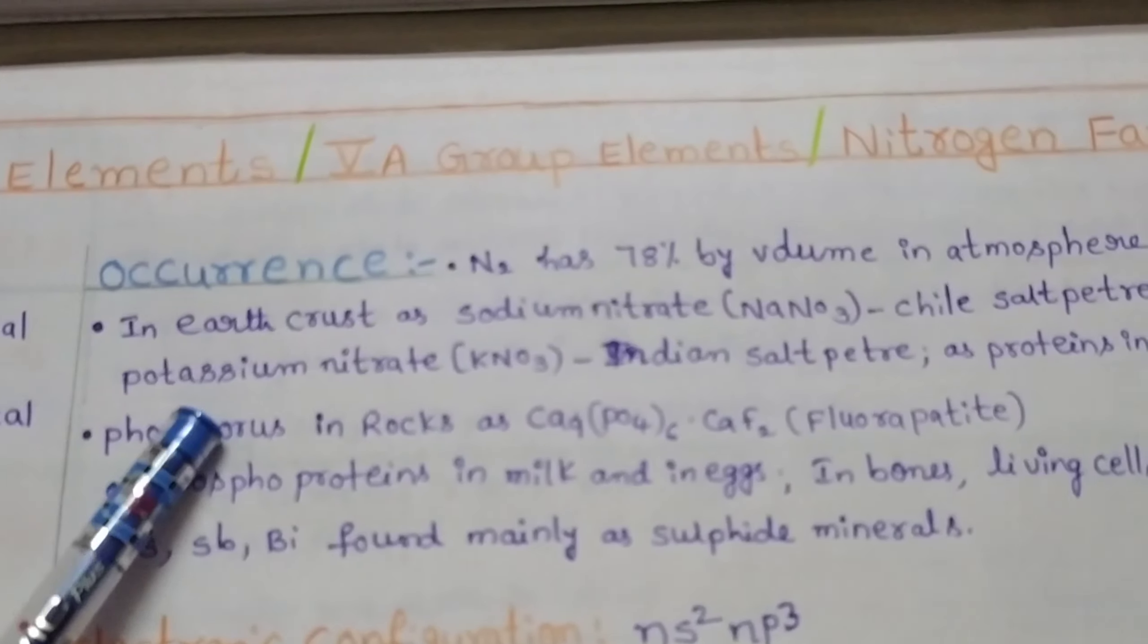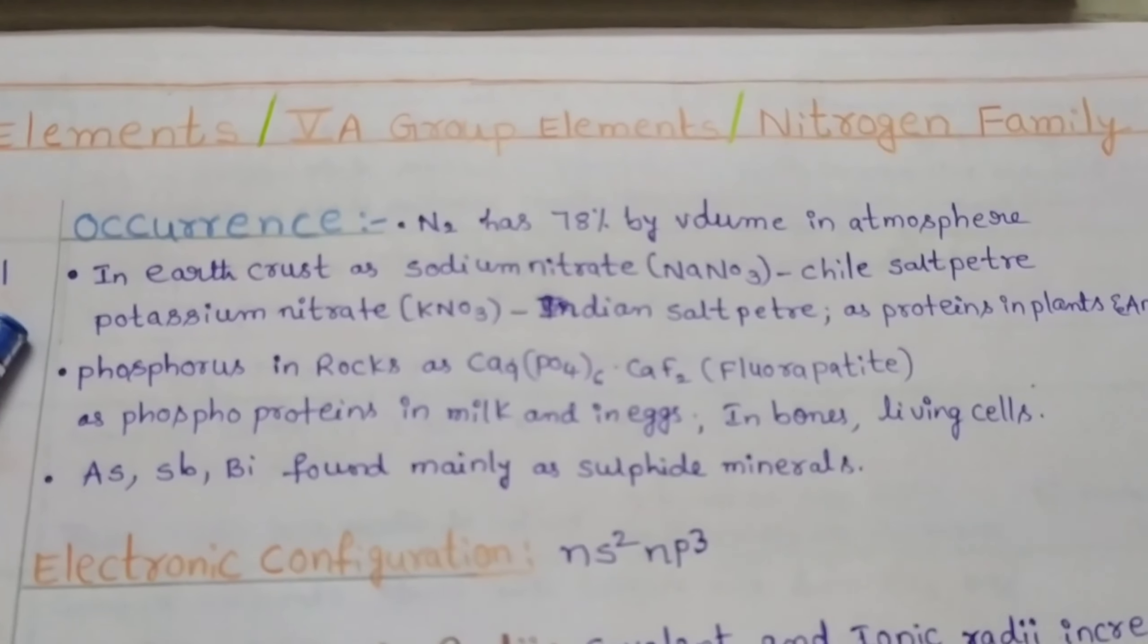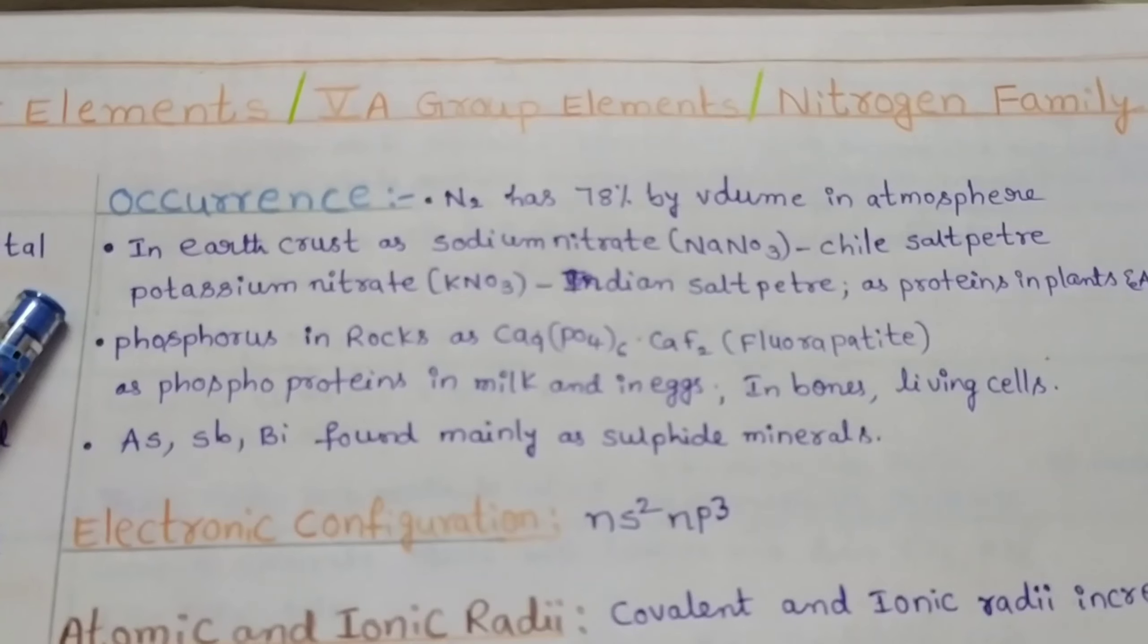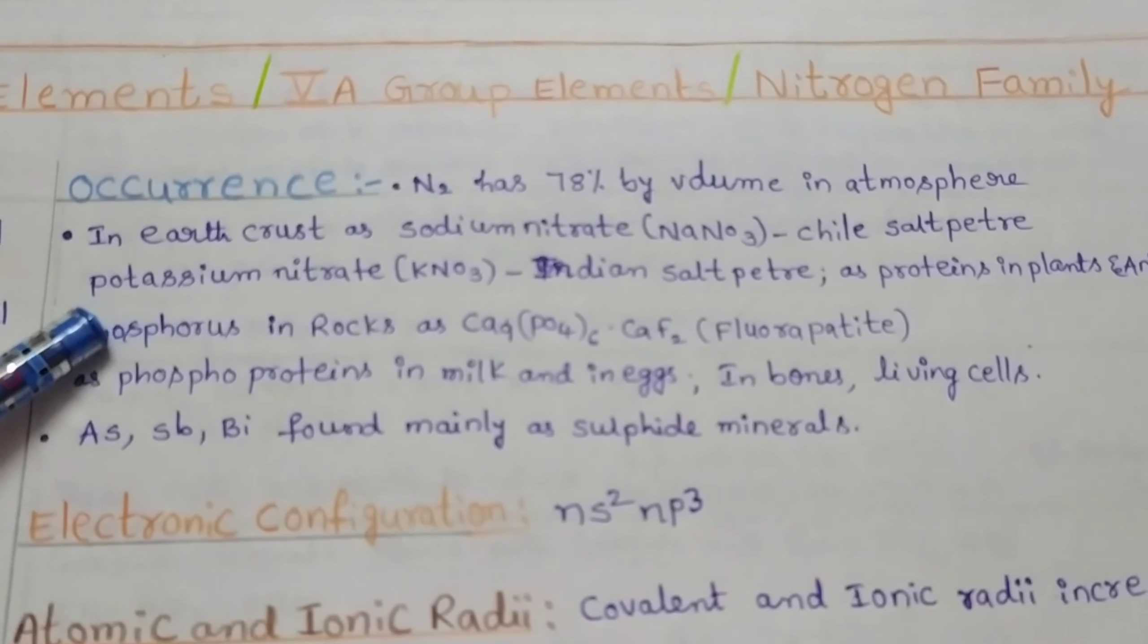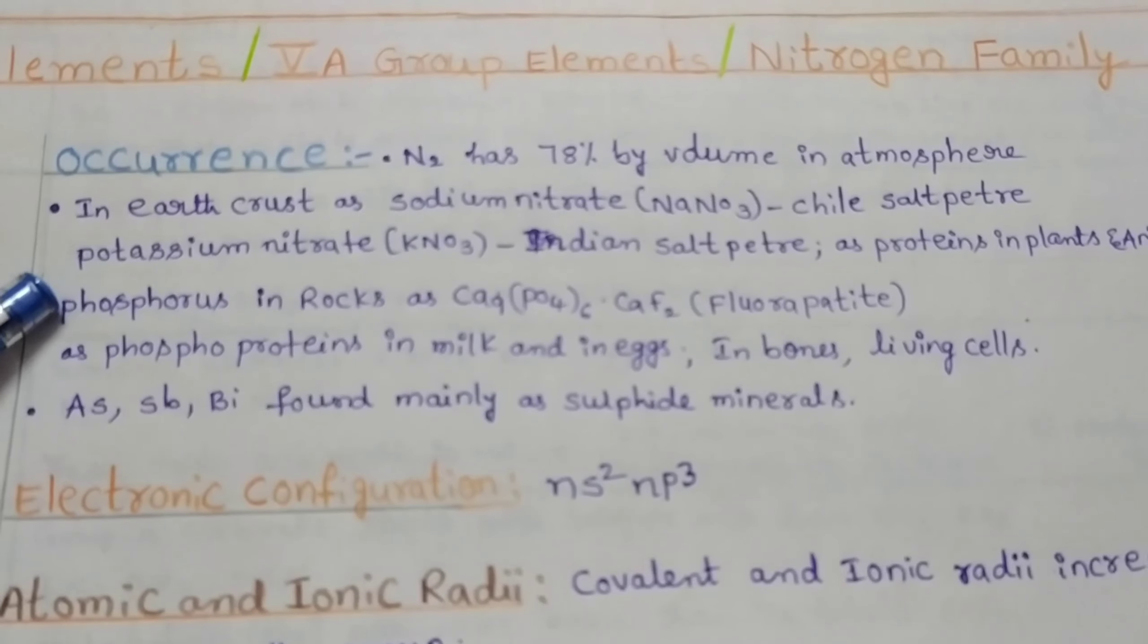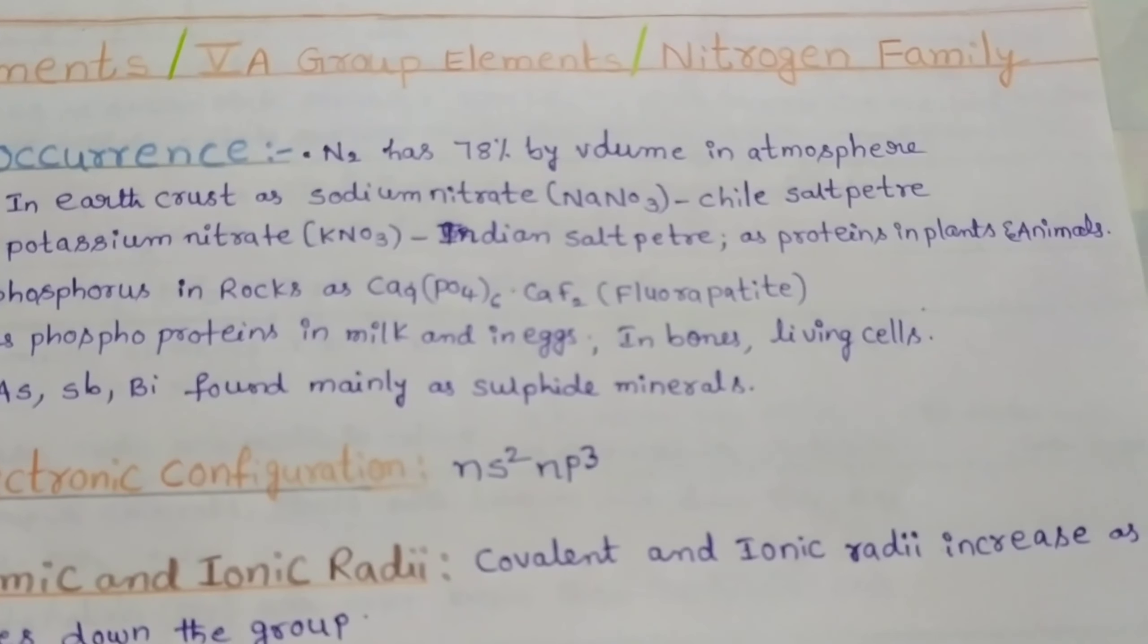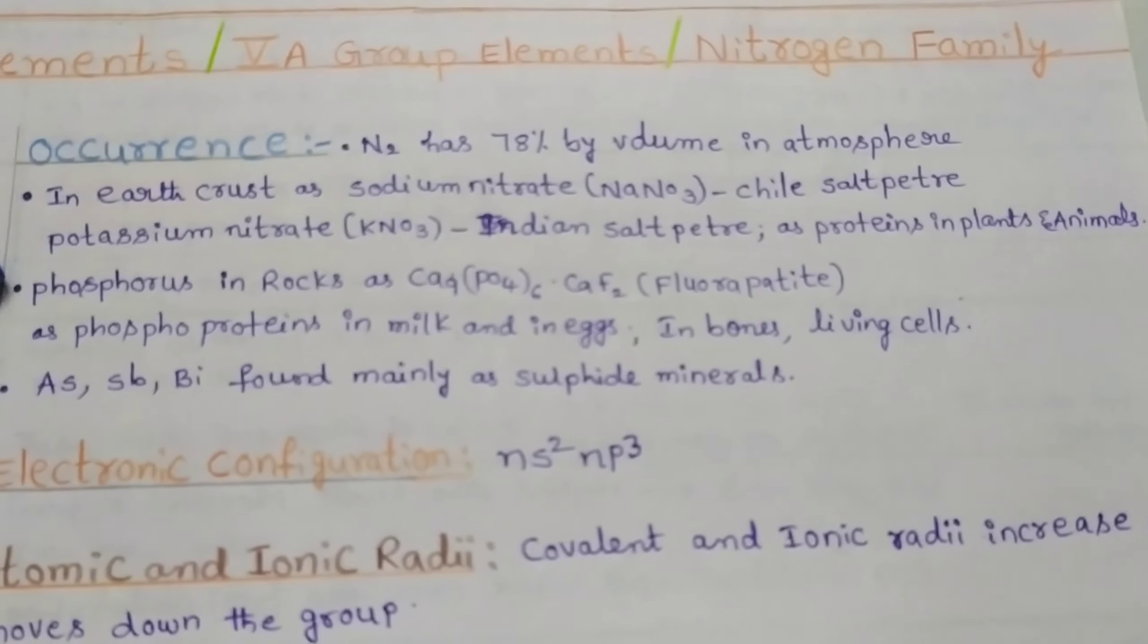Now we discuss occurrence. Nitrogen has 78% by volume in atmosphere. Nitrogen can also be obtained in earth's crust as sodium nitrate called Chile saltpeter, potassium nitrate called Indian saltpeter, and also obtained in proteins in plants and animals.